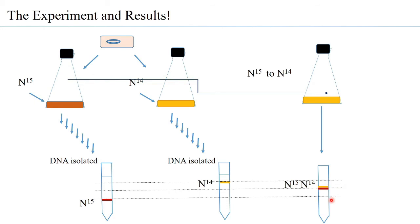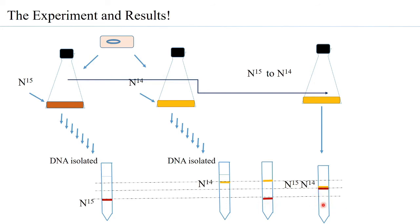With this result, they were definitely able to say it is not the conservative mode of replication. If it were conservative, one would have seen one band at the N14 position and another at the N15 position — the parent DNA fully conserved as N15 and the completely new daughter DNA as N14. But they did not find two distinct bands; instead, they found a single hybrid DNA band intermediate between N14 and N15. So the conservative mode was ruled out. However, the contention remained between semi-conservative and dispersive modes, since both would produce hybrid DNA.